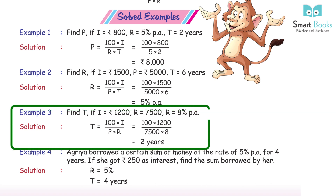Example 3: Find T if I = Rs 1,200, P = Rs 7,500, R = 8% PA. Solution: T = 100 × I ÷ (P × R) = 100 × 1,200 ÷ (7,500 × 8) = 2 years.